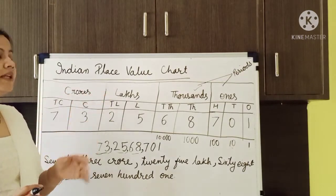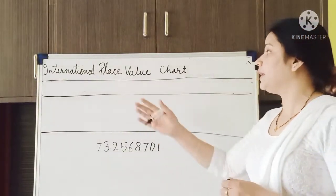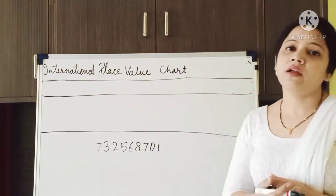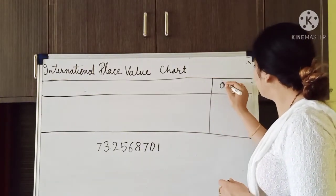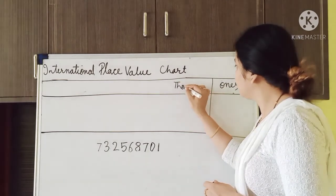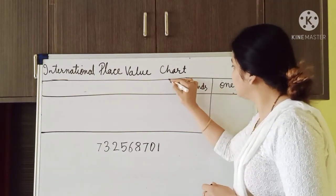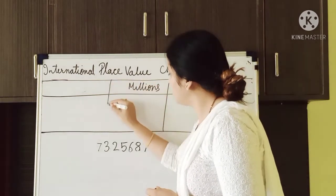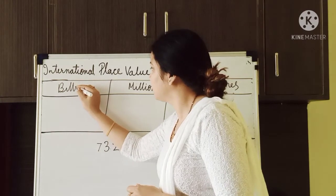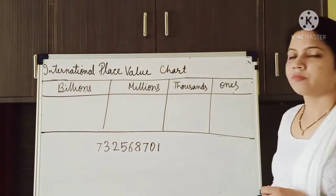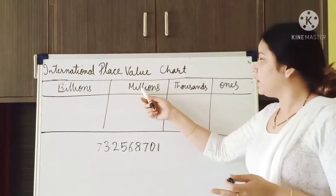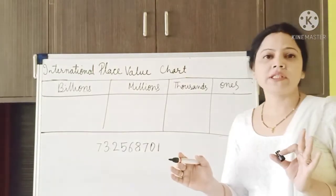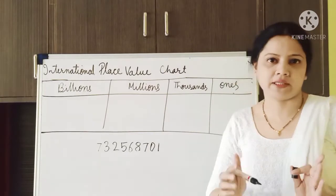I hope the Indian place value chart is clear to you. Now we will learn how to work on the international place value chart. In this also, first we have to group the numbers into periods, like we have done in the Indian place value chart — ones, thousands, millions, and billions. Unlike the Indian place value chart where we had lakh and crore, here we write millions and billions. One important thing: each period in the international chart is divided into 3 parts.